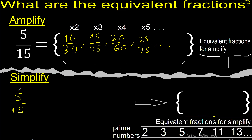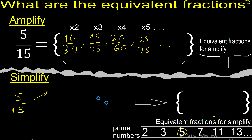Now, 5 and 15 can be divided by 5. 5 divided by 5 is 1, 15 divided by 5 is 3. 5 and 15 cannot be divided by another number; 1 and 3 cannot be divided by the same number, therefore...